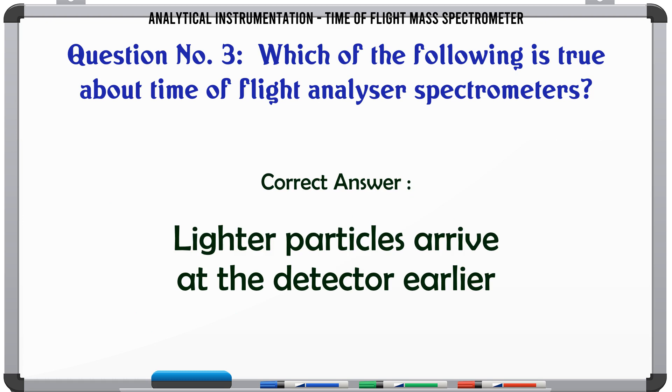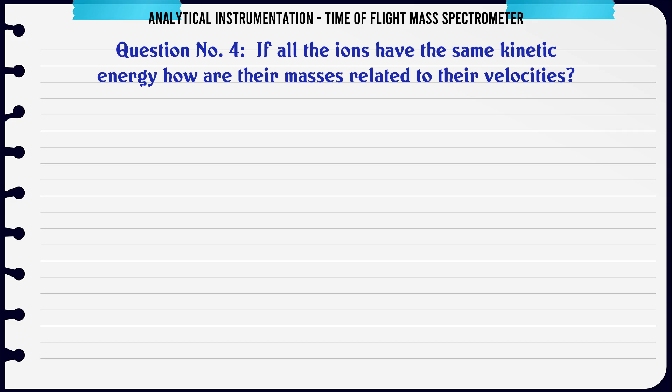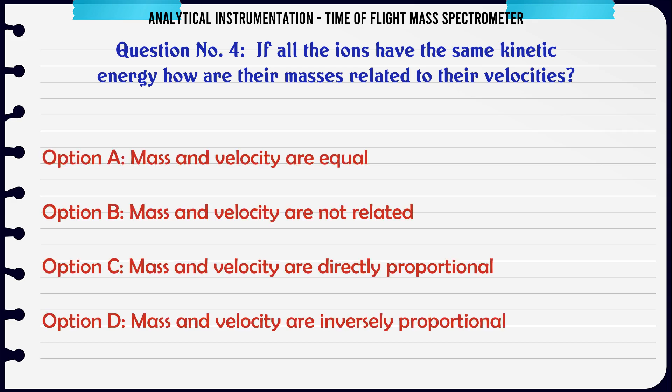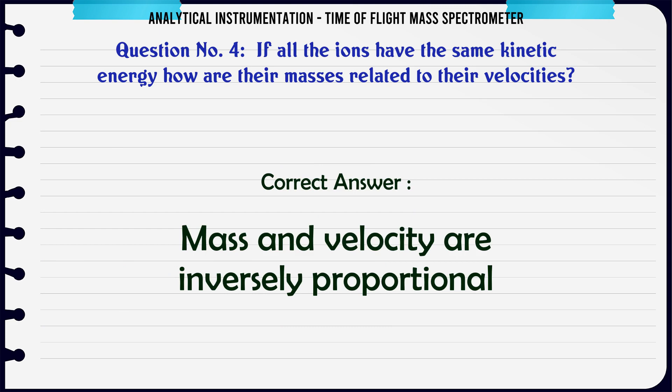If all the ions have the same kinetic energy, how are their masses related to their velocities? A: Mass and velocity are equal. B: Mass and velocity are not related. C: Mass and velocity are directly proportional. D: Mass and velocity are inversely proportional. The correct answer is D: Mass and velocity are inversely proportional.